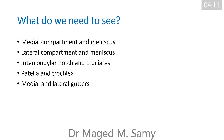What do we need to see? We need to see the medial compartment and meniscus, the lateral compartment and meniscus, the intercondylar notch and cruciates, the patella and trochlea, and finally the medial and lateral gutters.